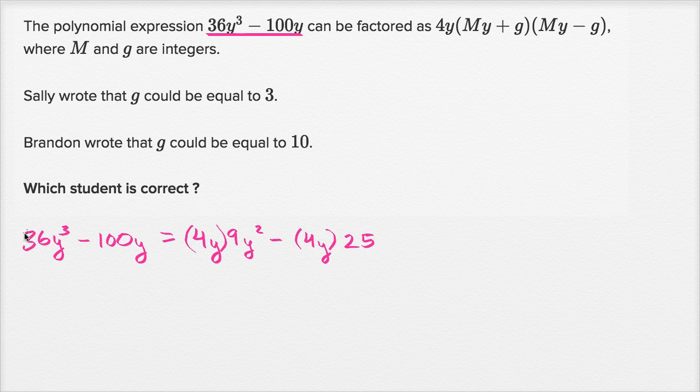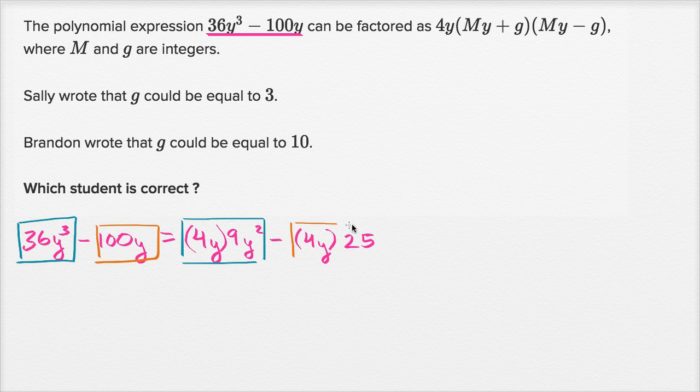So just to be clear what's going on, this 36y³, I just rewrote it as 4y times 9y². One way to think about it is I wrote it with the 4y factored out. And then the 100y, I wrote it with the 4y factored out. So it's 4y times 25. And now it's very clear that we can factor out 4y from this entire thing.